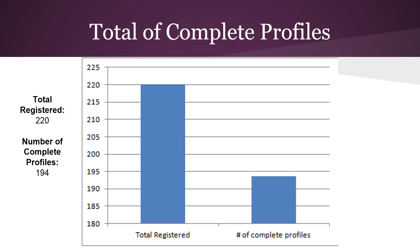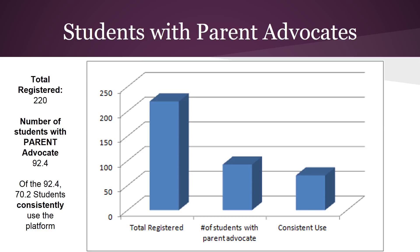Once we introduce students to the program they complete a profile. There were 220 students registered in 2014, and we had complete profiles for 194 of those students, though that didn't necessarily include both types of advocates — a school-related advocate and someone from home or the community. Of those 220 students, 92.4% completed the parent advocate component, and of those, 70.2% used the program consistently throughout the semester.